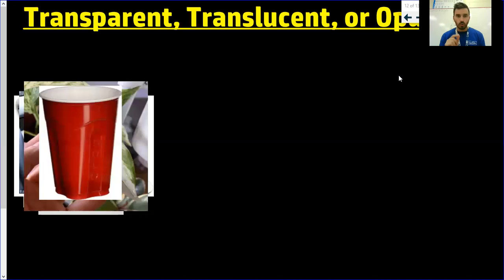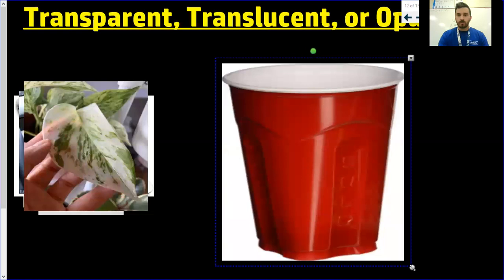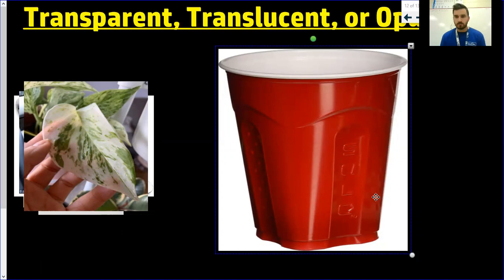I'm going to pull up a picture and make it a little bit bigger. I just want you to decide whether it's transparent, translucent, or opaque — I'll give you about three seconds on each. So this solo cup would be opaque. You cannot see through it; that light is being reflected or absorbed.